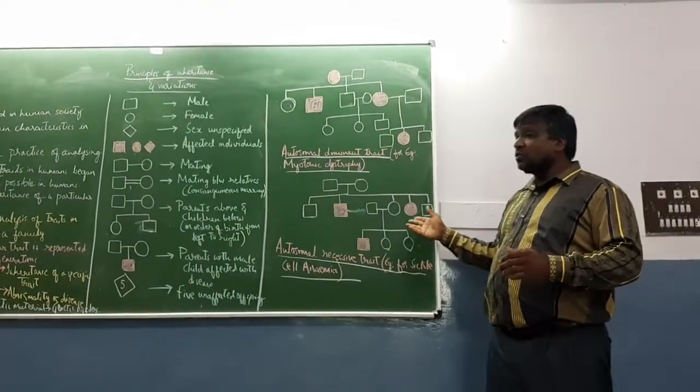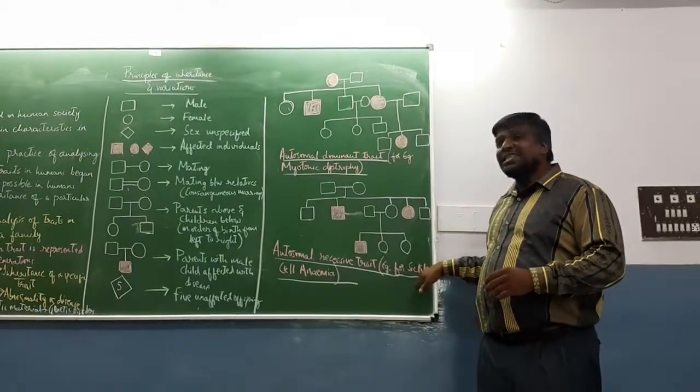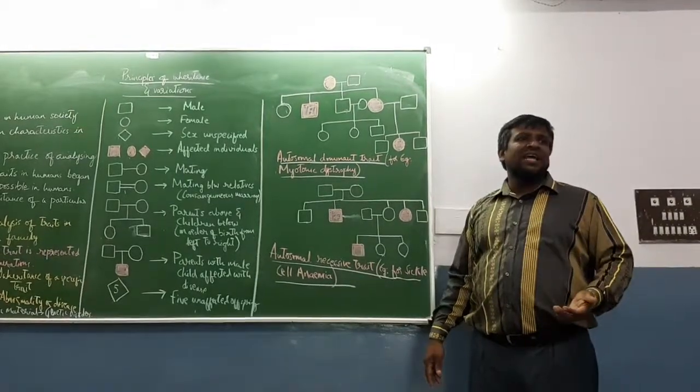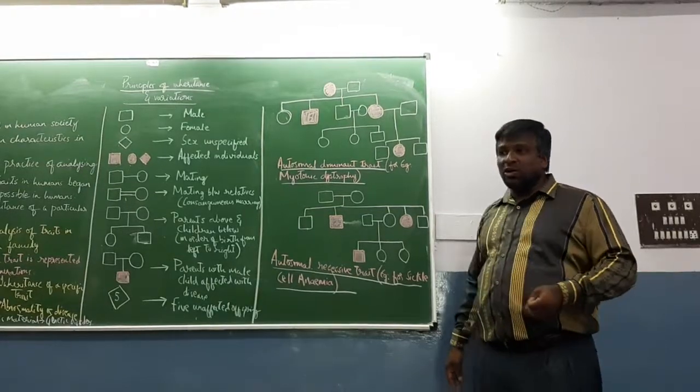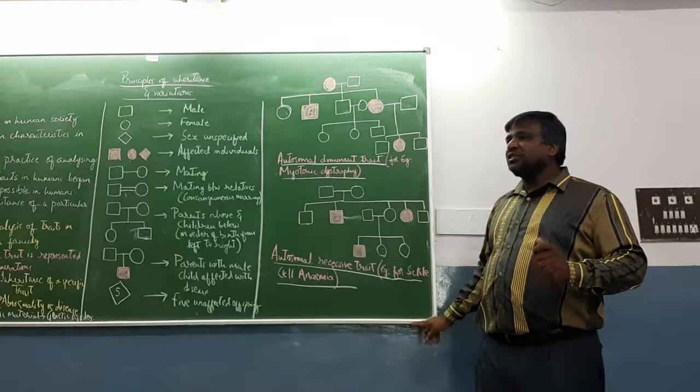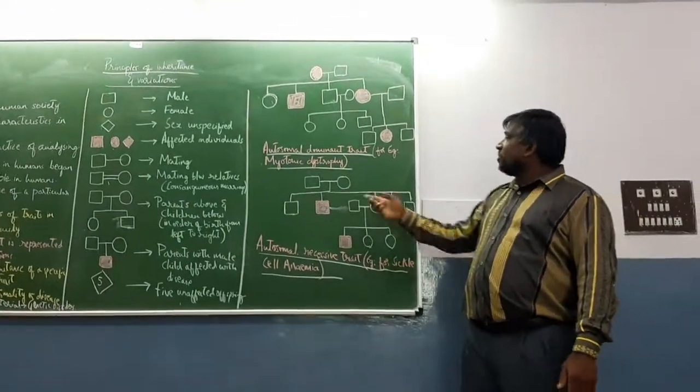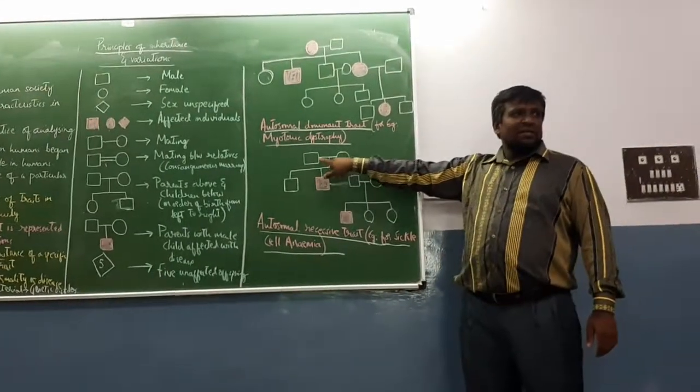What is the pedigree chart for an autosomal recessive trait? This example, they have taken sickle cell anemia. We will discuss sickle cell anemia in much more detail later under genetic disorders. Here you will find both are normal - normal male and female. They have got married.